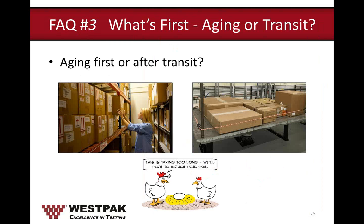Another common question: aging first or transit first? It sounds like the chicken-and-egg question. I suggest reviewing how you build and ship your devices. If you build to order — an order comes in, you build, then ship — I recommend transit first, then aging, because once the device reaches the customer, it will remain on their shelf for a while. But if you build consistently and ship when demand arises, then aging should be conducted first. As long as you test to your normal distribution environment and have data to support it, you should be okay.